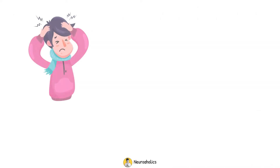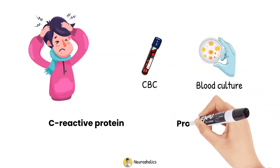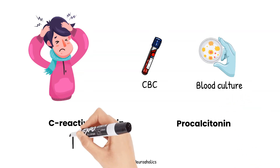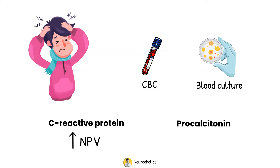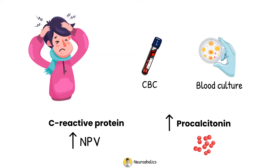Every patient suspected of bacterial meningitis should be checked for CBC, blood cultures, a C-reactive protein, and a serum procalcitonin. A normal C-reactive protein has a high negative predictive value in the diagnosis of bacterial meningitis. An elevated serum procalcitonin concentration occurs in severe bacterial infections. Serum procalcitonin is an additional helpful test in differentiating bacterial meningitis from viral meningitis when the CSF gram stain is negative.